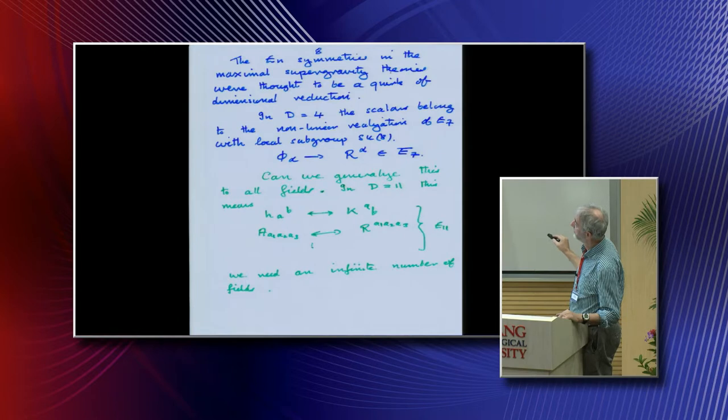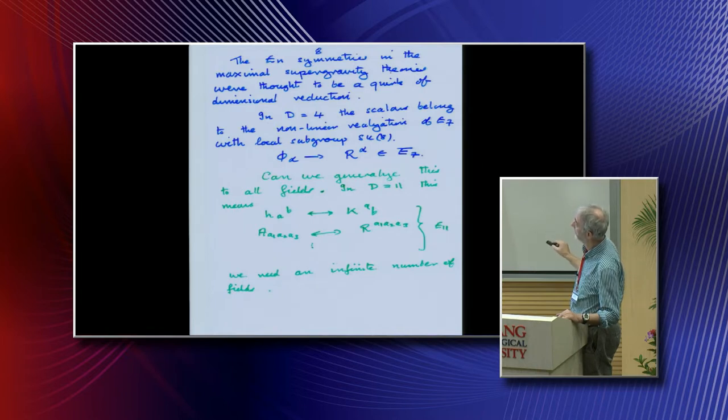Let's go to E11. We have the metric, so let's introduce this generator that has the same indices. In the group element, in the non-linear realization, the generator goes with the field. I have a three-form in 11 dimensions, so I introduce this. I get an algebra here. It was a very ugly algebra, but by taking a Kac-Moody algebra, it turned out to be E11.